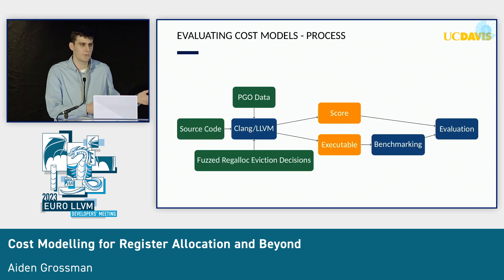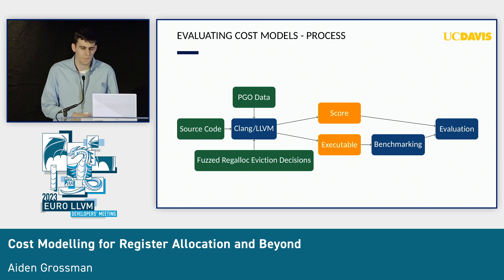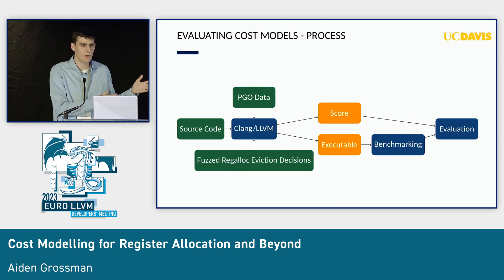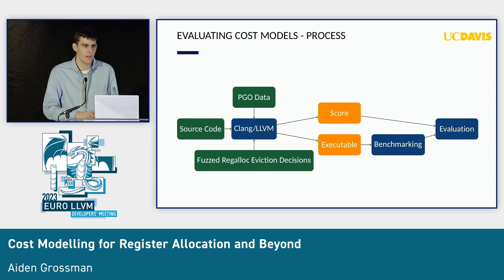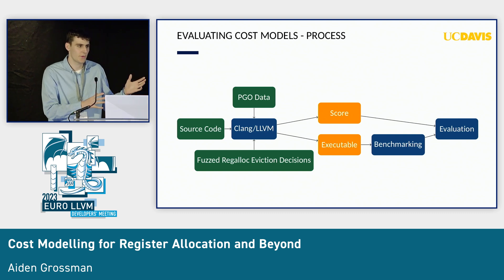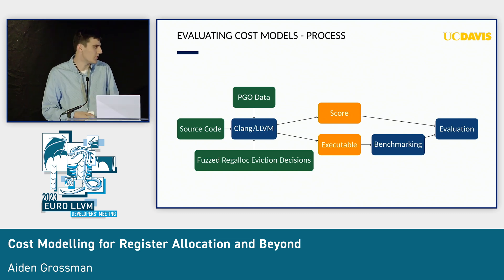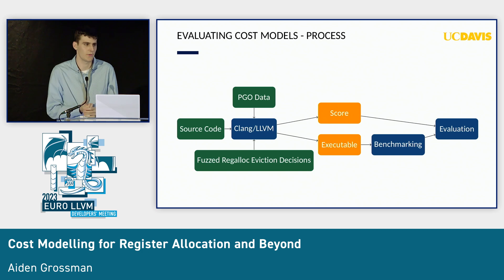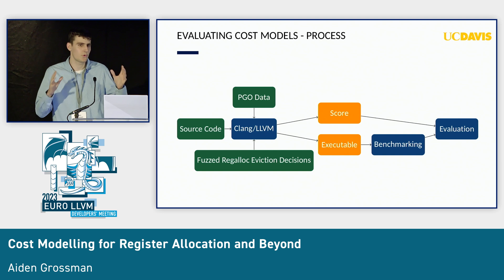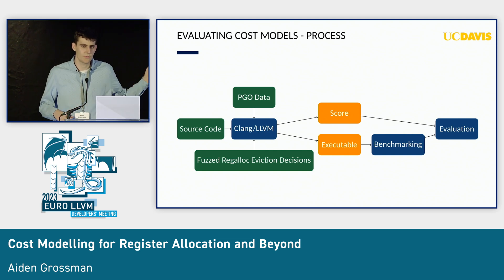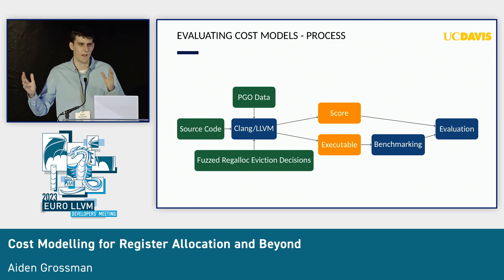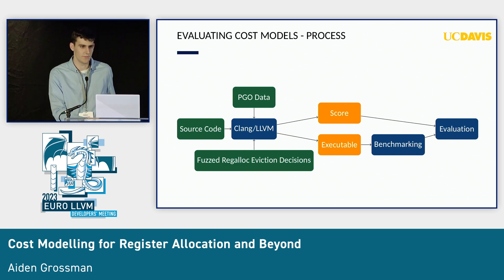In order to see how good it is, we need an evaluation framework. We're taking in source code in the form of annotated single-source benchmarks. You put it into the compiler along with PGO data from a standard compilation, then we're fuzzing specifically the eviction decisions in the register allocator, because that's the specific heuristic we're replacing. We get a score from the machine function pass, get an executable, benchmark it multiple times, take the average, and compare it with the score for statistical analysis.